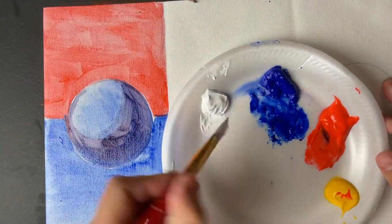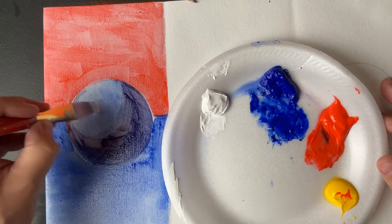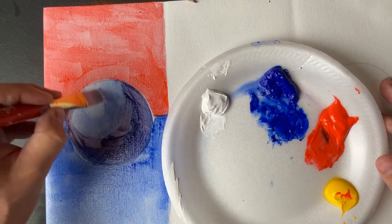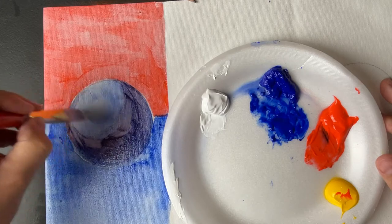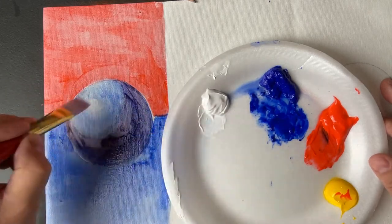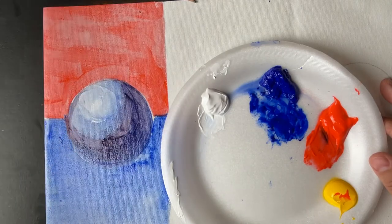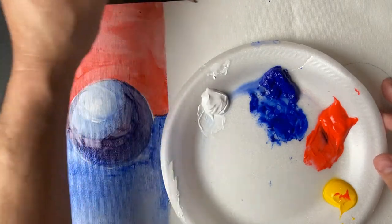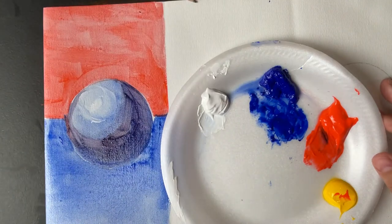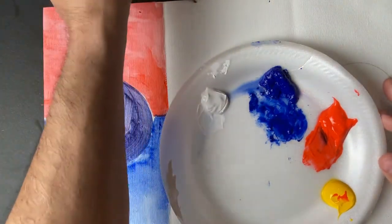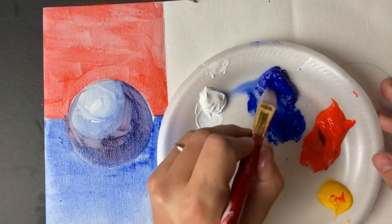I'm just trying to lay out my values and my colors. I'm going to go ahead and take some white for the highlight because there's a highlight right in here. I can grab a little bit more blue.